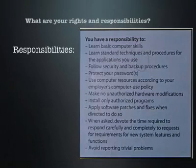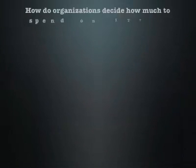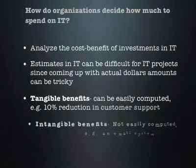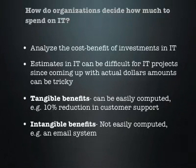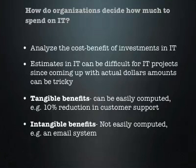Our last topic is on how organizations decide how much to spend on IT. First, they must analyze the costs and benefits spent in IT. Estimates on IT projects can be difficult because coming up with actual dollar amounts for these projects can be tricky. A tangible benefit can easily be computed — for example, an investment that would produce a 10% reduction in customer support. An intangible benefit is not easily computed; an email system used company-wide, for instance, can have benefits that are very far-reaching and also very hard to calculate.